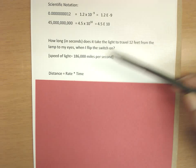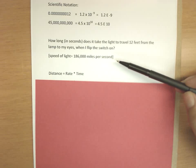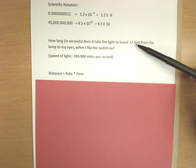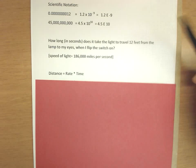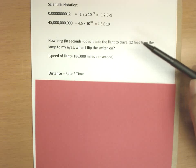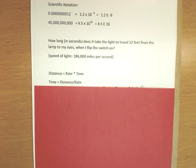So we have a distance of 12 feet, and we have a rate of 186,000 miles per second. And the first thing we notice is this is in miles, and this is in feet. And we want these units to be in the same system. So we're going to convert the rate, 186,000 miles per second, to a rate in terms of feet per second.